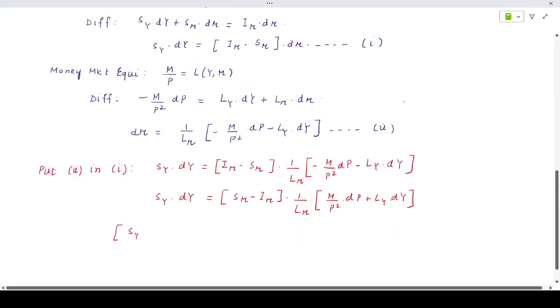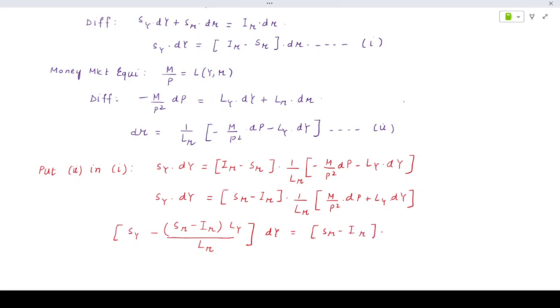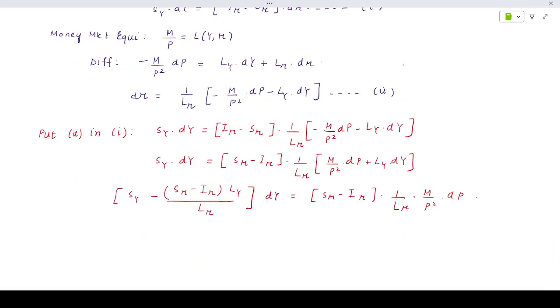Bringing all the dY terms on the left side: [Sy minus (Sr minus Ir) Ly/Lr] dY equals (Sr minus Ir) 1/Lr M/P squared dP. Taking a bit of common: Sy Lr minus (Sr minus Ir) Ly times dY equals (Sr minus Ir) M/P squared dP.